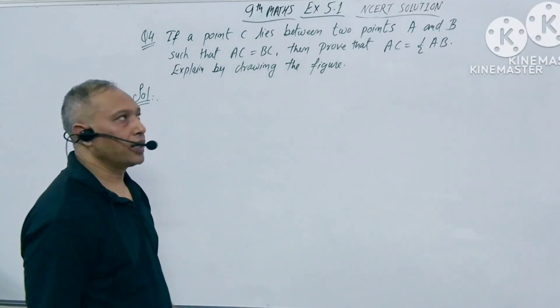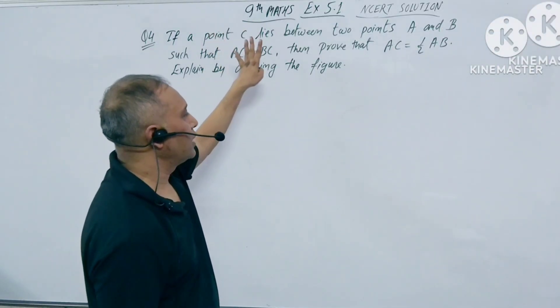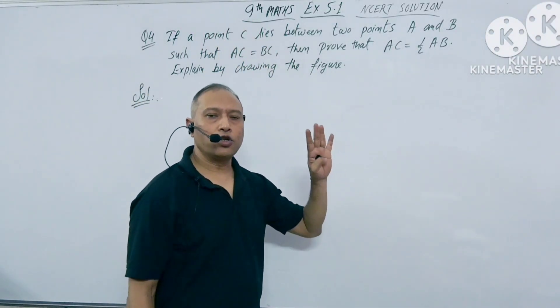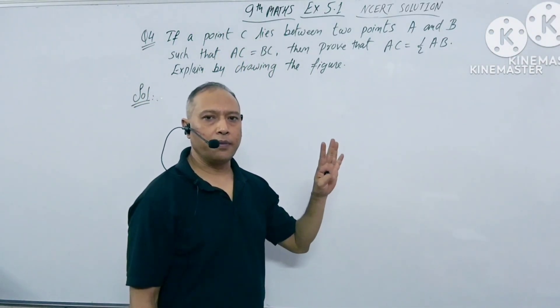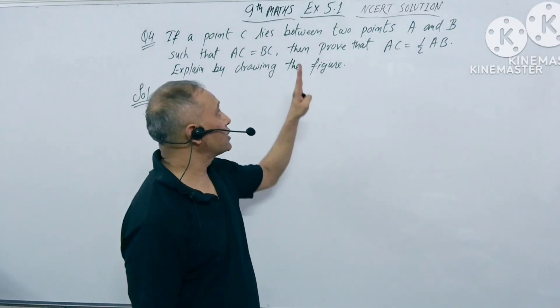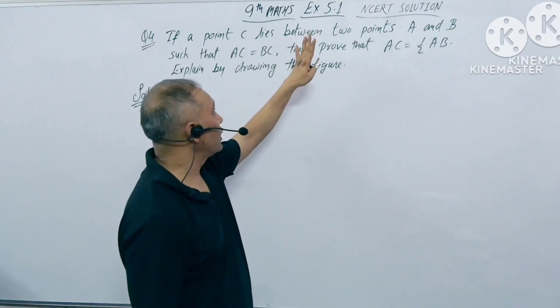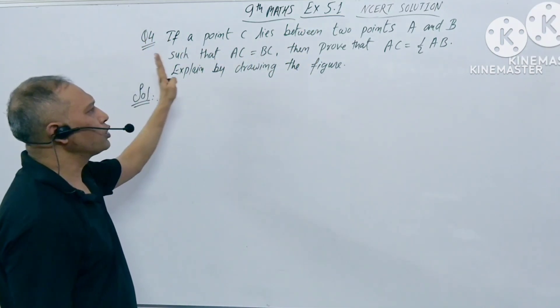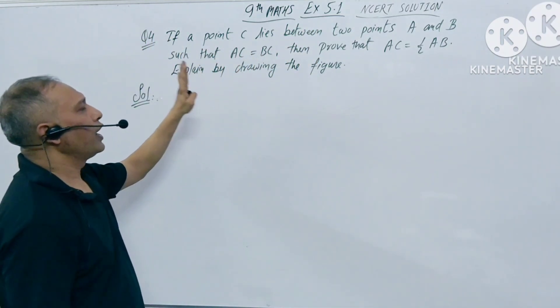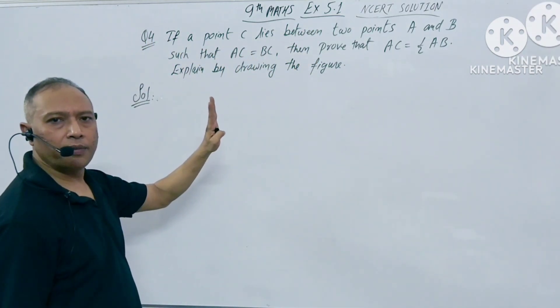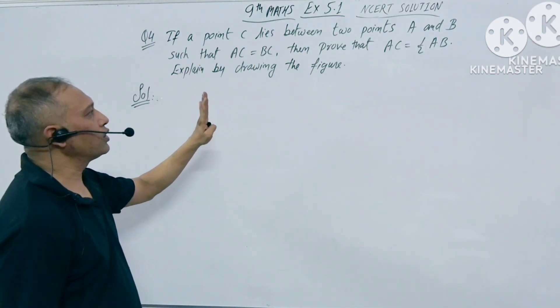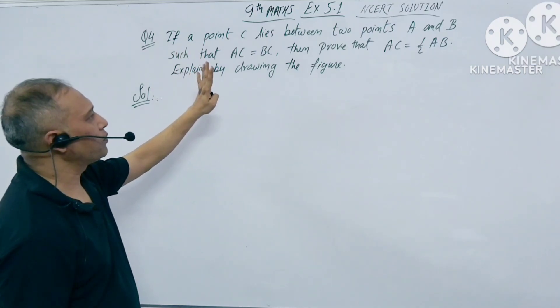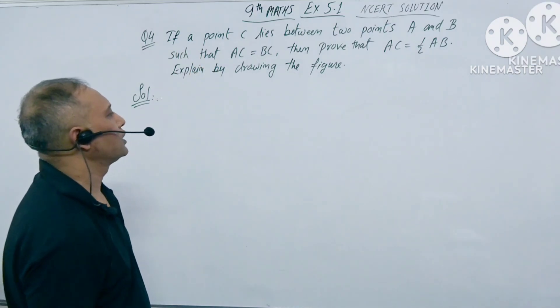Today we are going to do Class 9 Math Chapter: Introduction to Euclid Geometry, Exercise 5.1, Question No. 4. It's a very important question. If you get this question in your examination, then you should be 100% sure of this question.